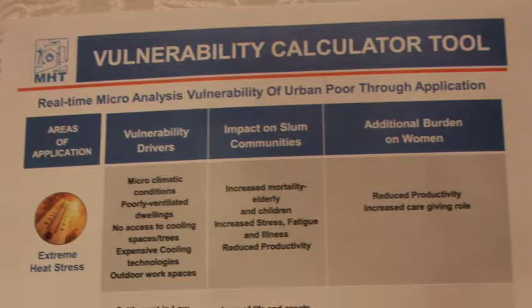Based on the data they provide, this application will let them know whether they are highly vulnerable to four climate stresses: heat stress, water scarcity and contamination, flooding and inundation, and vector-borne disease. The objective of developing this app is to make households realize whether they are at high risk for a particular stress, and then motivate them to take the adaptation measures required to reduce their risk.